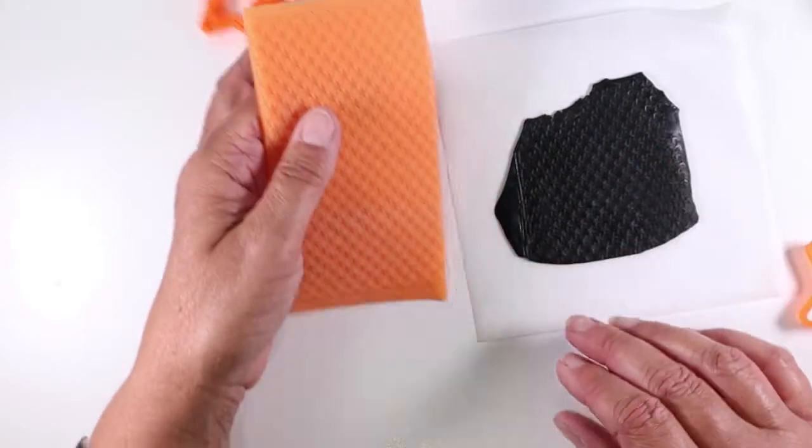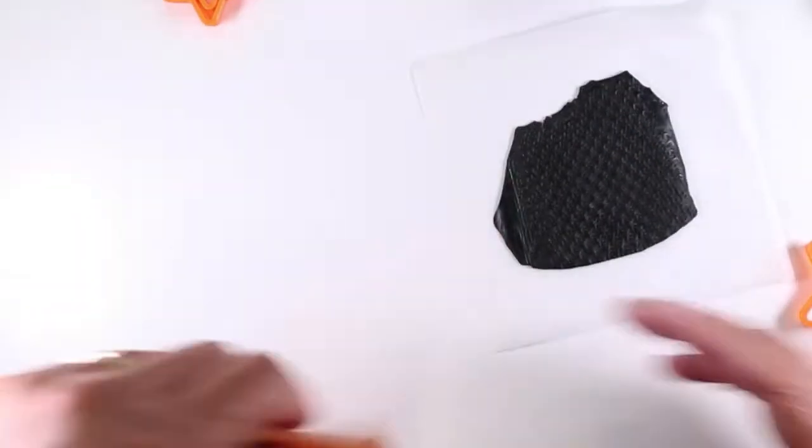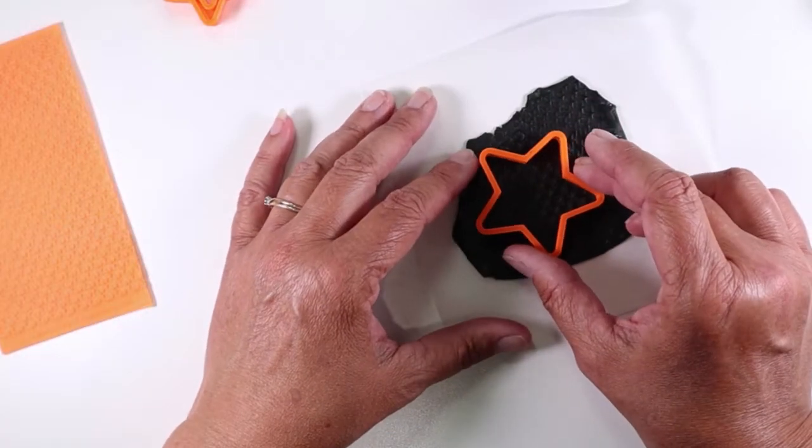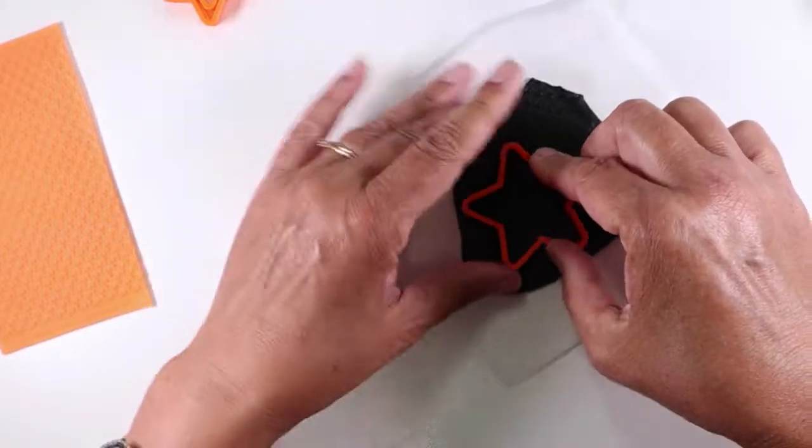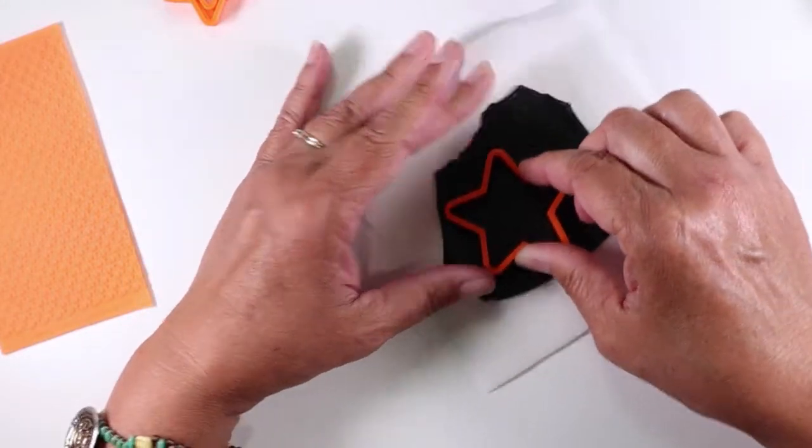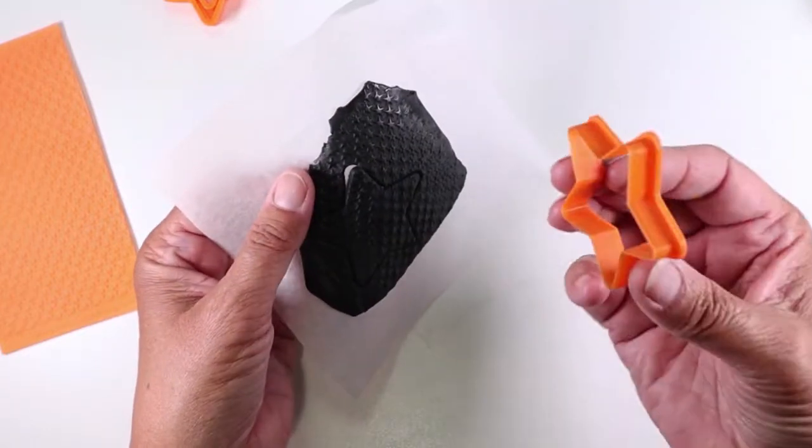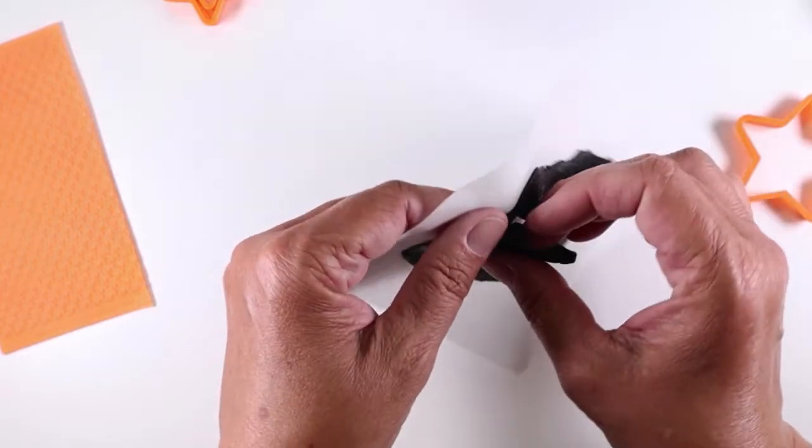This is some black clay that I rolled out on my thickest setting and then just embossed with the falling stars silicone stamp that came in the stars and stripes box and I'm going to cut out the largest star cutter and create-along has redone something with their creating of cutters and they are so nice and sharp now it's really a joy to use them.